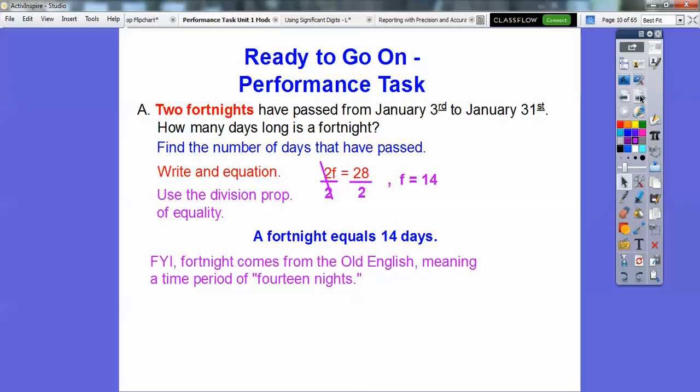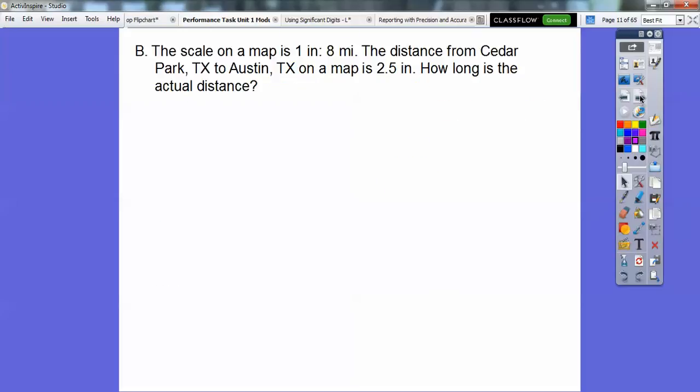Now this is what I found out when I looked up fortnight. It comes from the old English language, and it just means a time period of 14 nights. Alright, let's try another one here.